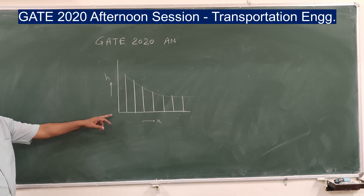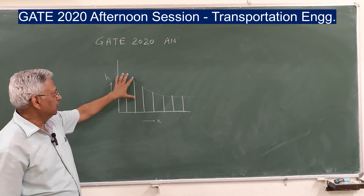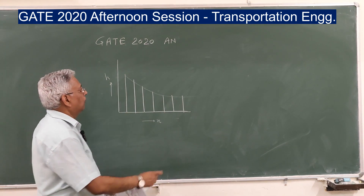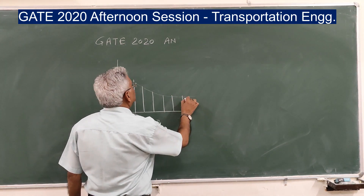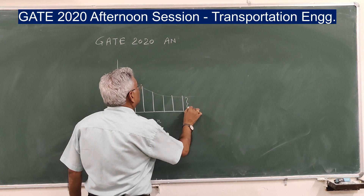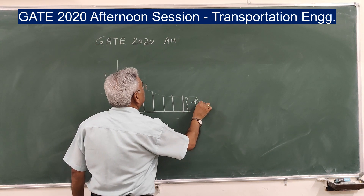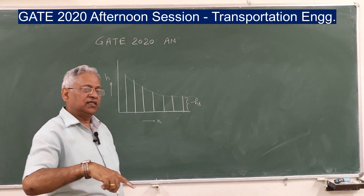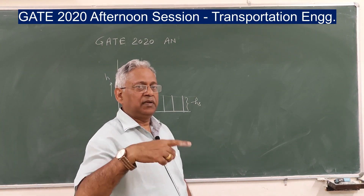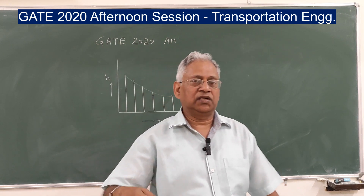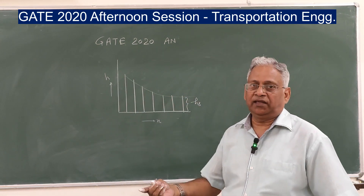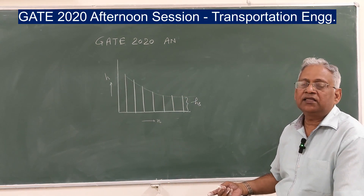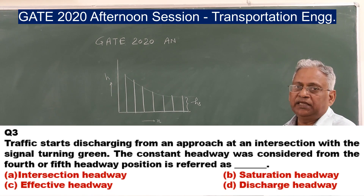For the first four or five vehicles the headway is larger, and this constant headway that follows is what we call the saturation headway (Hs). The inverse of this is the maximum rate of discharge at a stop line. So the correct answer is saturation headway, that is option B.